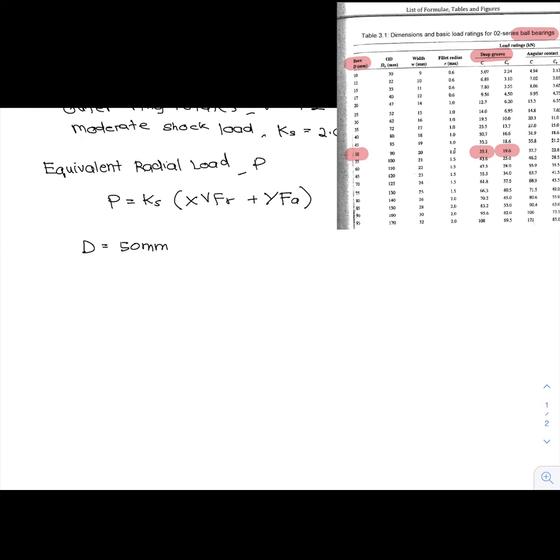Before that, we must find the value of load rating from table 3.1 for deep groove ball bearing. Given that when D equal to 50 mm, the value of load rating C is 35.1 kN and Cs is 19.6 kN.